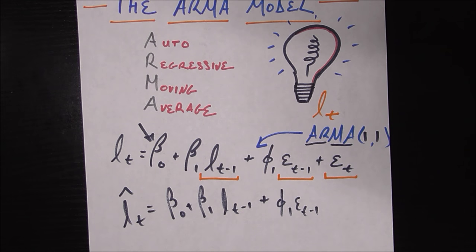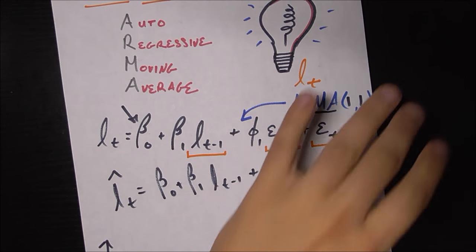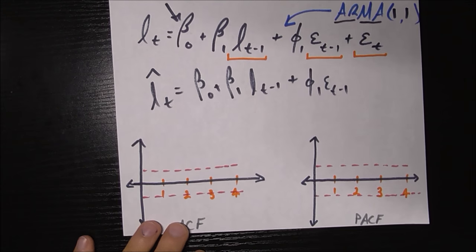Similarly, for my moving average bit, I would have not only epsilon sub T minus 1, the error last month, I would incorporate the error from two months ago, from three months ago, from 12 months ago, whatever I set up as my order of my MA bit. This is just the simplest one to get us started.